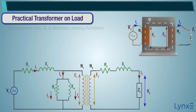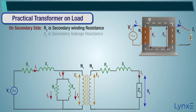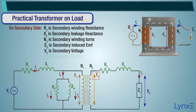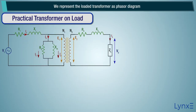On the secondary side: R2 is secondary winding resistance, X2 is secondary leakage reactance, N2 is secondary winding turns, E2 is secondary induced EMF, V2 is secondary voltage, I2 is secondary current. We represent the loaded transformer as a phasor diagram.